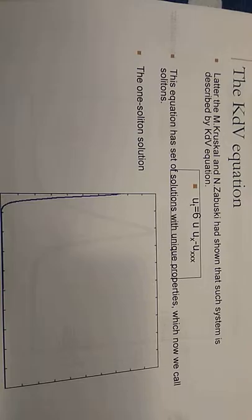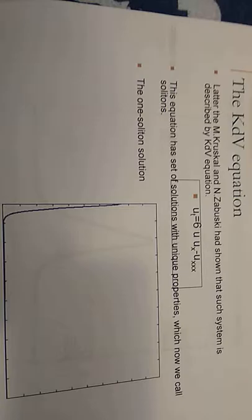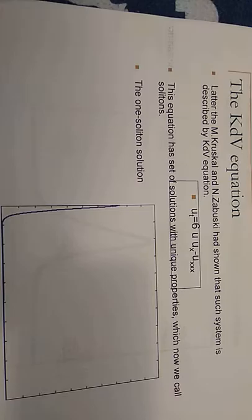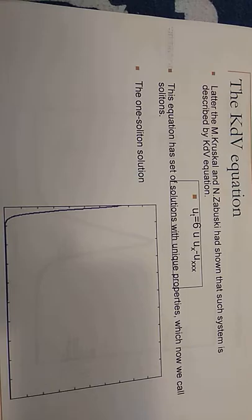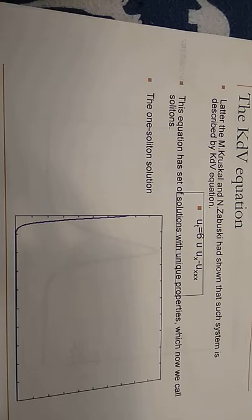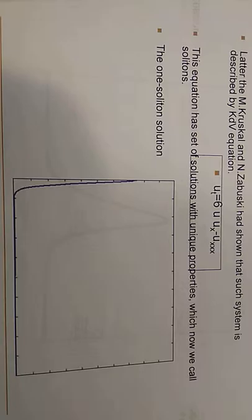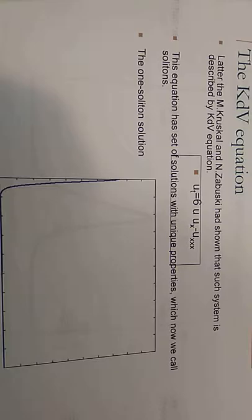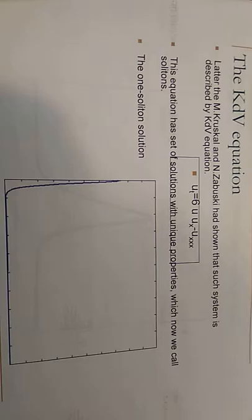Zabusky and Kruskal subsequently studied the quantum limit of the Fermi-Pasta-Ulam experiment and surprisingly obtained the KdV-type equation. They found that the solitary wave solutions had behavior similar to the superposition principle, despite the fact that the waves themselves were highly nonlinear. They dubbed such wave solutions solitons and produced a new solution technique for them. The equation has a set of solutions with unique properties which we call solitons.